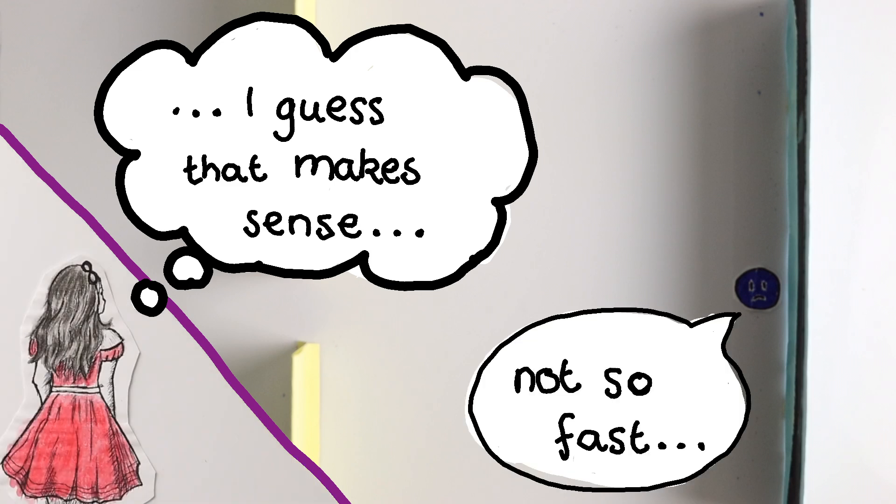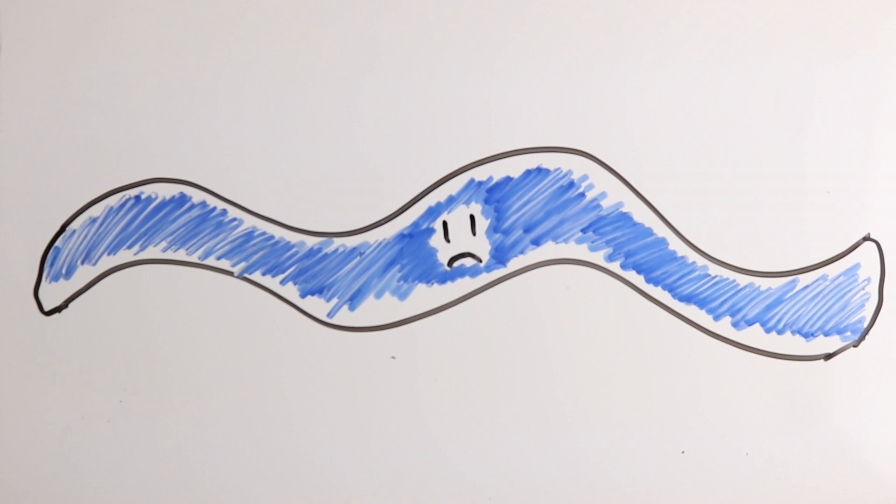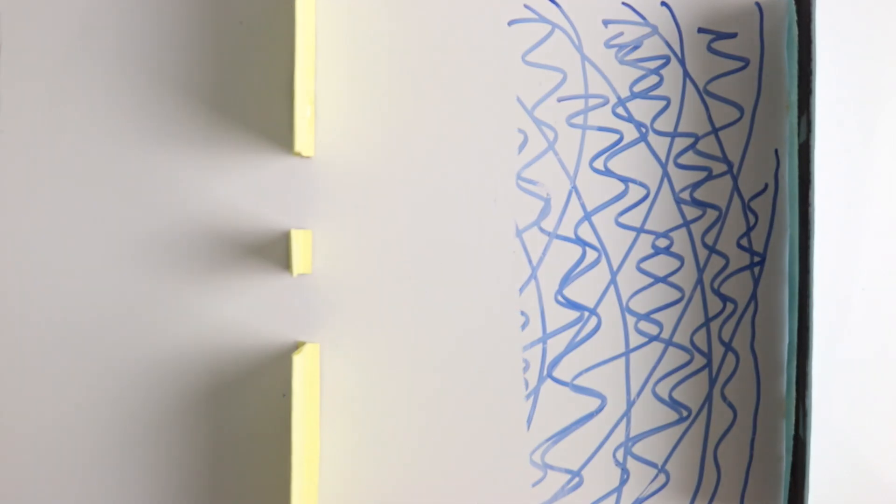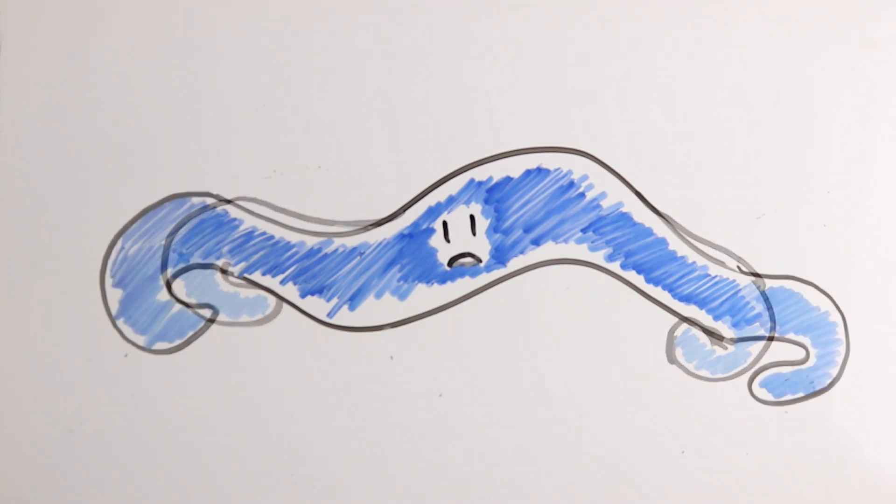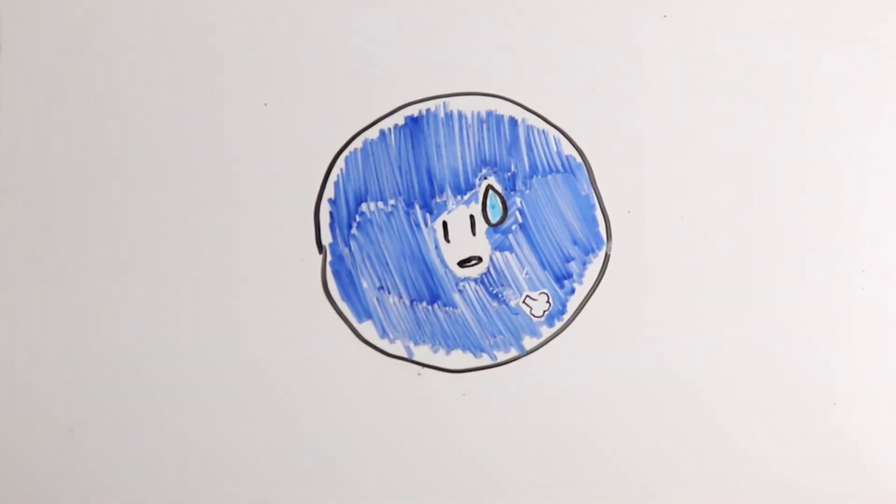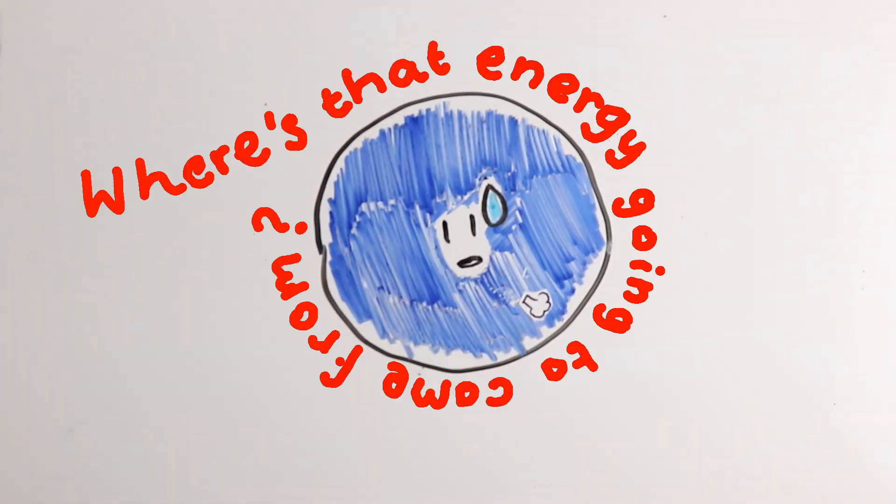But think of what that would mean. The electron, before it's measured, is spread out everywhere, but as soon as it's at the wall, it has to pick up its mass and pull it all back together. Moving mass takes energy. Where's that energy going to come from?